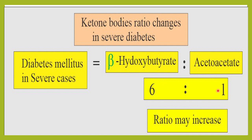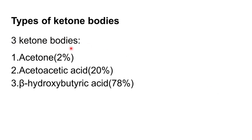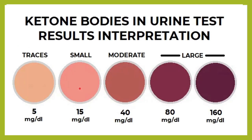There are three types of ketone bodies: acetone, acetoacetic acid, and beta-hydroxybutyric acid. Normally in a random urine sample, ketones are less than 5 mg/dL. Trace ketones means around 5 mg/dL; small is around 15 mg/dL; moderate is around 40 mg/dL; and large or heavy is around 80–160 mg/dL, usually seen in diabetic ketoacidosis.